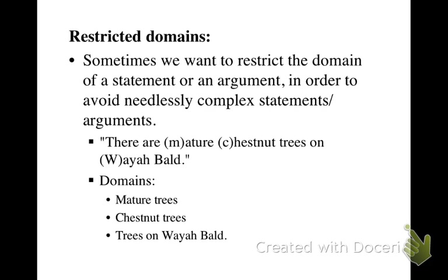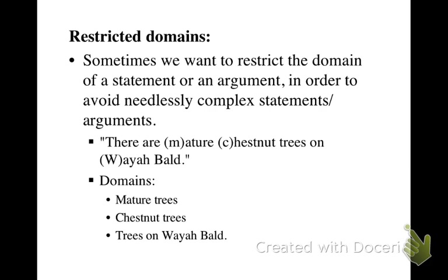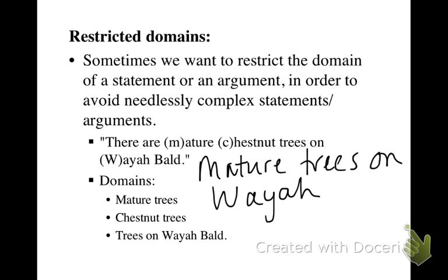We can also restrict the domain further by combining domains. So if we said that our domain was mature chestnut trees, then the translation would be: there exists an x such that it is on Weyabald. Likewise, if our domain was mature trees on Weyabald, then the translation of the statement would be: there exists an x such that x is a chestnut tree.